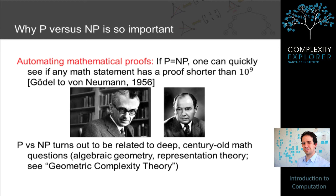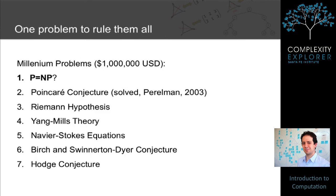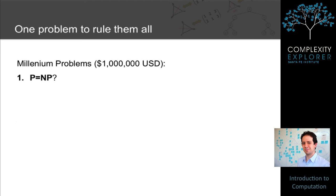In the last 15 years or so, people have realized that the P versus NP question is related to deep, centrally important old problems in mathematics — not just about proofs, but about geometry and algebra. In the year 2000, the Clay Mathematical Institute announced its seven Millennium Prize problems, each worth a million US dollars. One was solved in 2003, one is the Riemann hypothesis, and one is P versus NP. If P were equal to NP, you could solve all seven by simply asking an algorithm whether they were true. So P versus NP — the question of whether brute force search can always be improved — turns out to be a fundamentally important problem throughout computer science and mathematics.